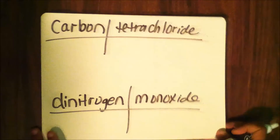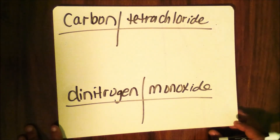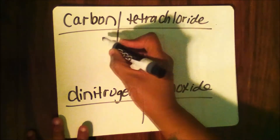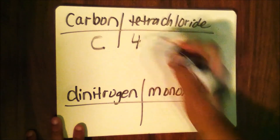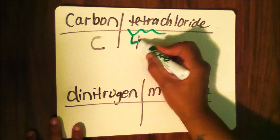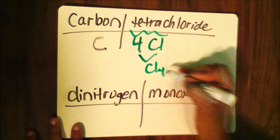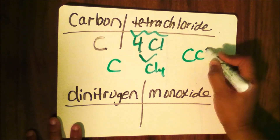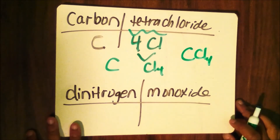The first example is carbon tetrachloride. Carbon's symbol is C. Tetra means four, and chloride is Cl — but I must rewrite that as Cl₄. Bringing the carbon symbol down, I get CCl₄ — carbon tetrachloride.